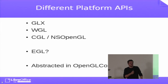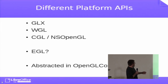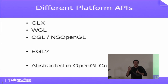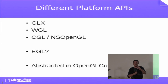EGL is used on Wayland and on Android. We are not using it yet — we have no support for it yet, but it can be easily added. All of this platform-level stuff is abstracted in the OpenGL context class, which creates an OpenGL context object that hides all these details from the user.